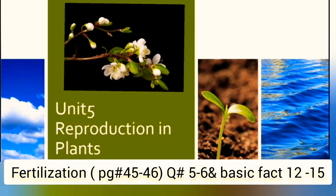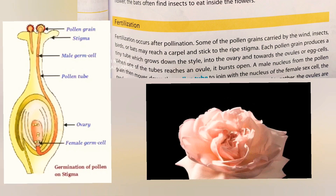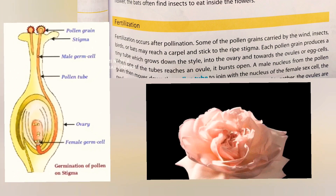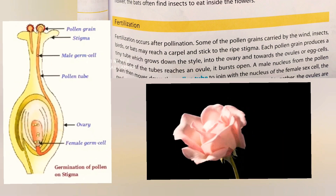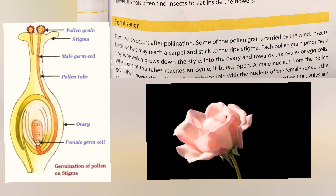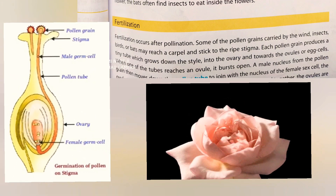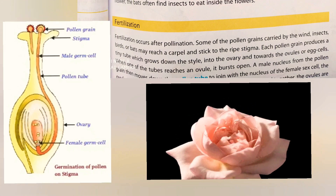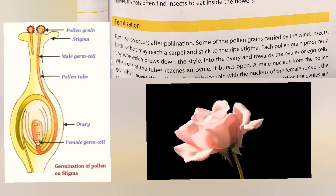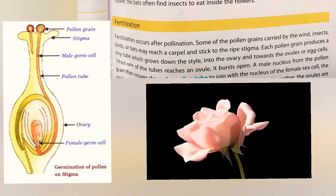Good morning and assalamualaikum Grade 7, how are you today? Today we will do fertilization in question number five and six. Fertilization occurs after pollination. When the pollen grain lands on the stigma, a tube rises from it and grows down the style and enters the ovary.